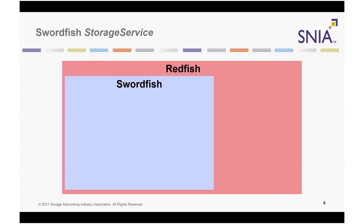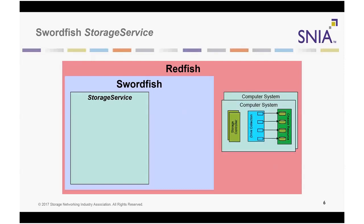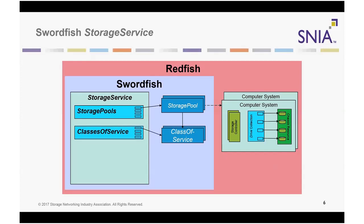Swordfish and Redfish exist within a single set of modeling schemas, which are generally referred to as Redfish. Swordfish resources refer to Redfish resources. In order to provide a more application-centric approach to storage management, Swordfish introduces the storage service resource. The hardware providing storage services is contained within Redfish computer system resources. Resources within computer systems are used to form storage pools, which refer to sources of capacity such as disk drives contained within computer systems. Storage pools are capable of providing specific classes of service, represented by class of service resource collections.